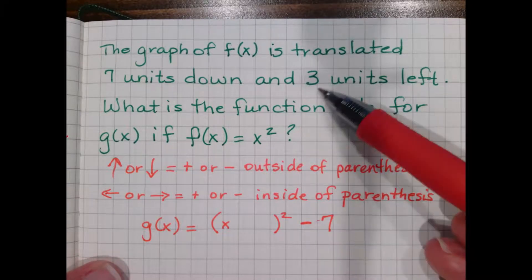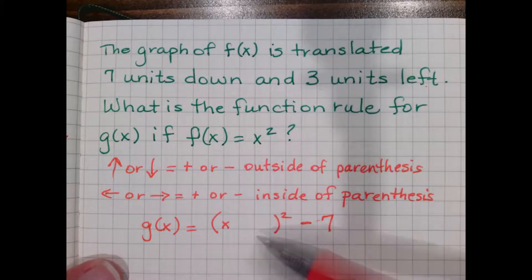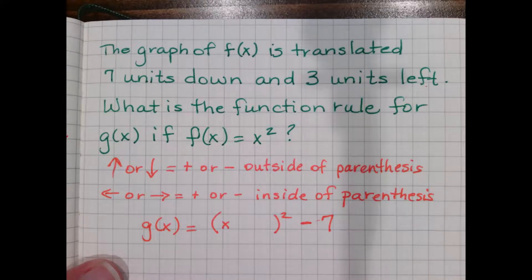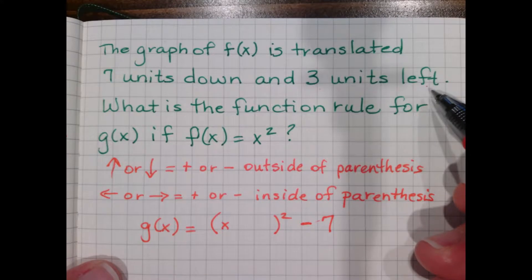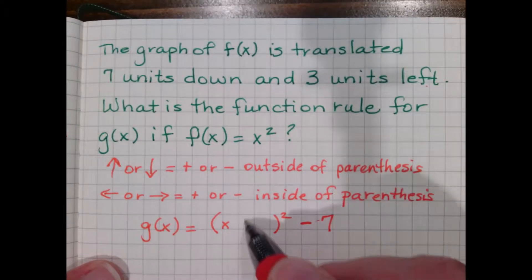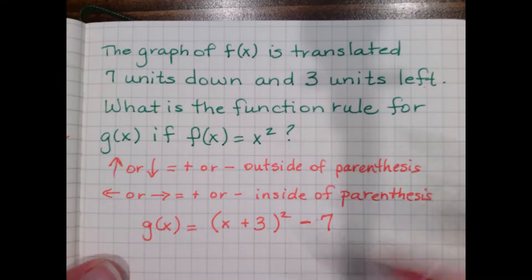Then let's do the three units to the left. And this is plus or minus inside the parentheses. But when it's inside the parentheses, it's the opposite of what you think. So you normally would think left meant minus. So instead, we do the opposite. So we do a plus three there. And that's my function rule.